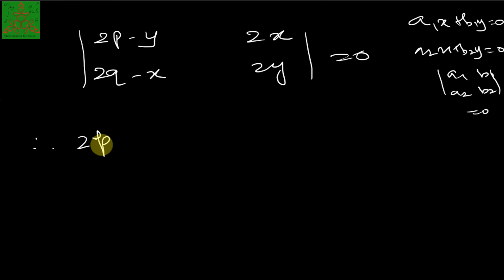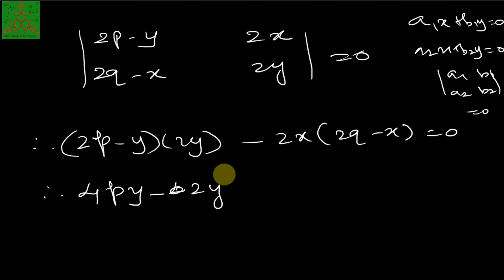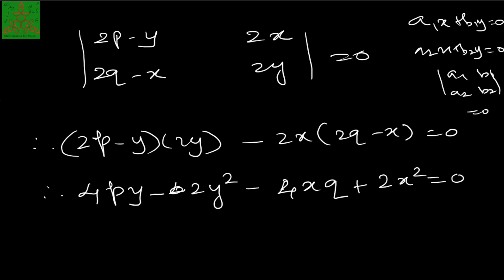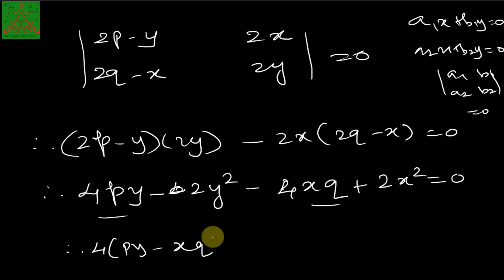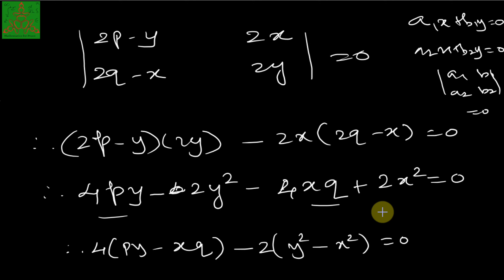Setting the determinant to zero: (p − y)·2y − 2x·(q − x) = 0, which gives 2py − 2y² − 2xq + 2x² = 0. Simplifying, the required partial differential equation is 2(py − xq) − (y² − x²) = 0, or equivalently 2(py − xq) = y² − x². You can divide both sides by 2 to simplify further.